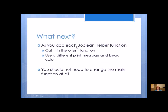Once those two boolean helper functions work, add more. Do left wing up and right wing up — add more boolean helper functions and call them in the orient function using a different print message and a different bead color for each. Once those work, try level and upside down. If you have time, also add tap and shake. When adding these you should not need to change the main function — just add boolean helper functions and modify your orient function.